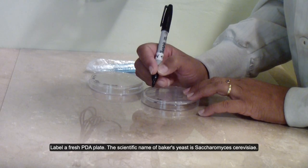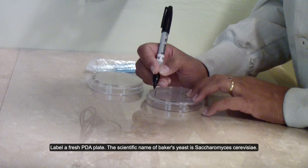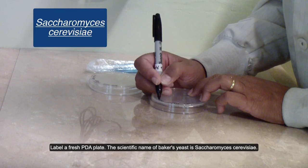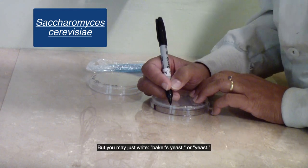Label a fresh PDA plate. The scientific name of baker's yeast is Saccharomyces cerevisiae, but you may just write baker's yeast or yeast.